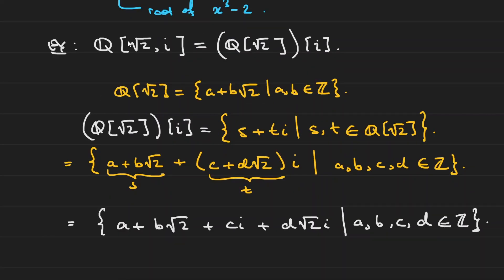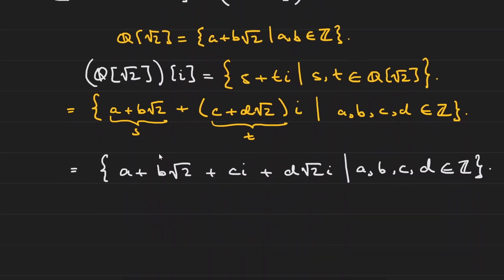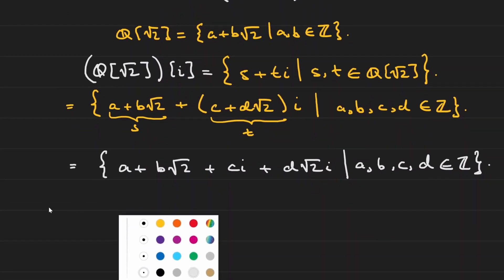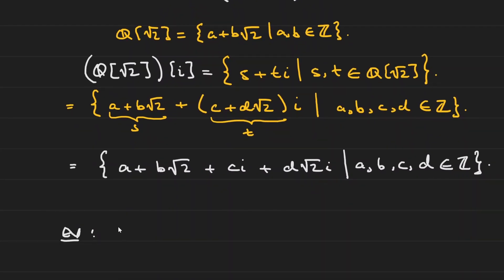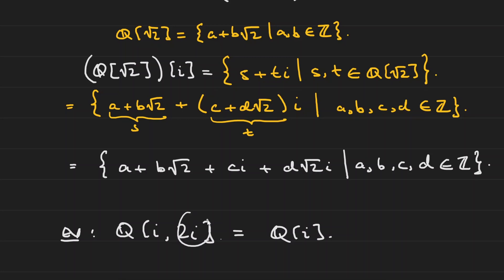So if you want to adjoin multiple elements you can do this step by step. However, if you have something like the rational numbers and you adjoin i, and then also adjoin 2i — this is still going to equal Q adjoined i, because once you've adjoined i, 2i is automatically in there. If you adjoin an element that's already in the ring, it does nothing.